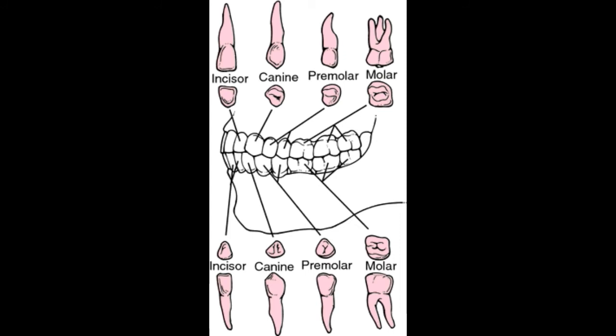Bicuspid teeth are described as transitional teeth, as their function is between that of the canines and the molars. Teeth have a specialized function for handling food as it is transferred from the front to the back of the mouth while chewing. The shape of the incisors and canines is ideal for cutting or tearing food, while the bicuspids are ideal for crushing and the molars for grinding.